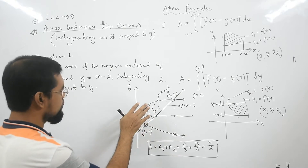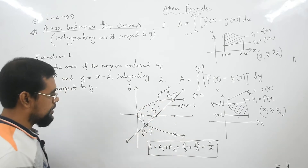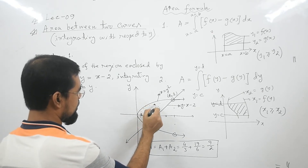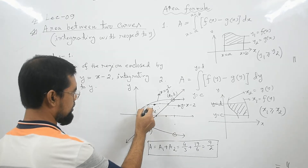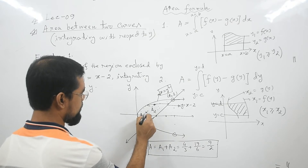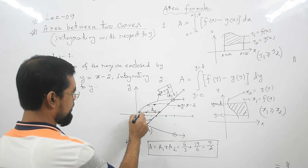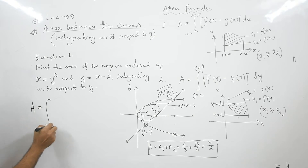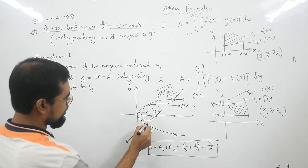With Formula 2 we can calculate the area directly without dividing the region into two parts. For any point in this region, if you move right you will reach the straight line y equals x minus 2, and if you move left you will reach the parabola x equals y squared. This holds throughout the entire region, so we can apply Formula 2 directly.